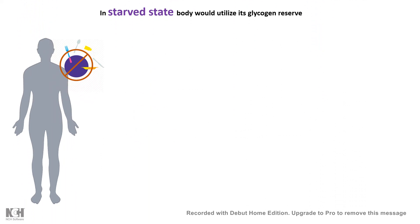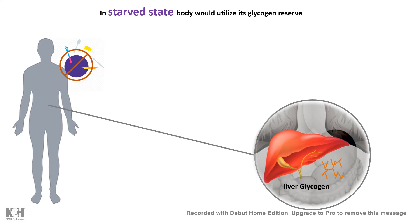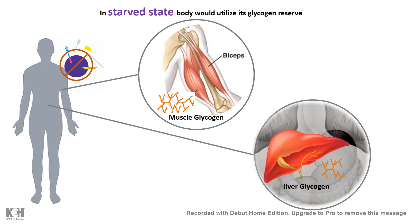One important situation when glycogenolysis occurs is the starved state. In the starved state, the body is deprived of any external nutrition intake, so it must break down its own glycogen reserves to produce energy. The liver glycogen and muscle glycogen are broken down to produce glucose, which provides energy — especially for the brain, which requires glucose as fuel.